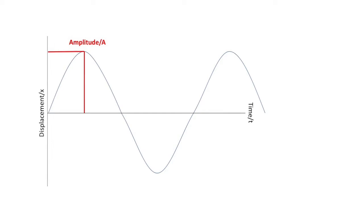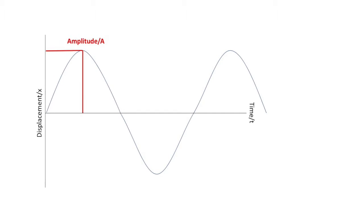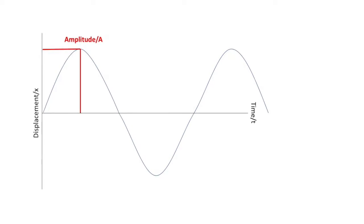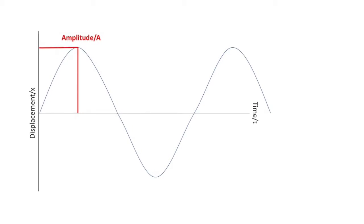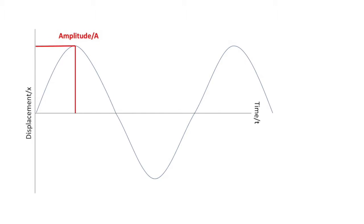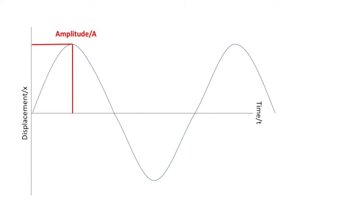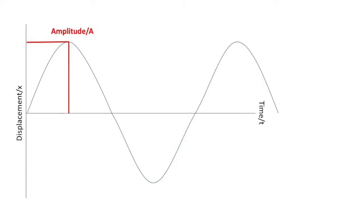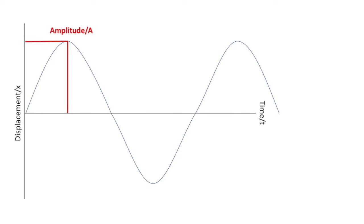Amplitude is the distance between a crest or a valley to the equilibrium point. Its symbol is A, and it is measured in meters. The equilibrium point is the straight line that you see. It could be thought of as the X axis.